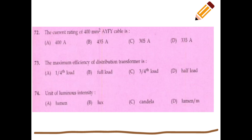AYFY cable stands for: A = aluminum conductor, Y = PVC insulation (inner sheath), F = flat strip armour, Y = PVC outer sheath. This is the current rating question for 400 mm² AYFY cables.